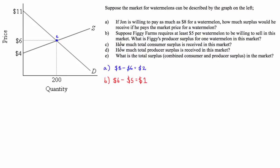Part C is asking how much total consumer surplus is received in this market. The total consumer surplus is the area below the demand curve but above the market price. So the total consumer surplus is the area of this triangle here. To solve part C, we just have to calculate the area of this triangle.